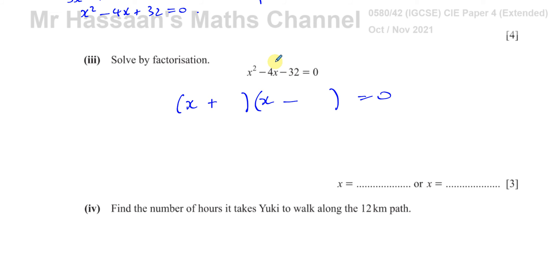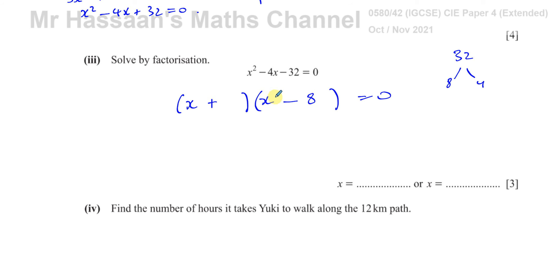We need two numbers with a product of −32 and a sum of −4. Considering factor pairs of 32: 4 × 8 = 32. Using −8 and +4: (−8) + 4 = −4 ✓ and (−8) × 4 = −32 ✓. So the factorization is (x + 4)(x − 8) = 0, giving x = −4 or x = 8.